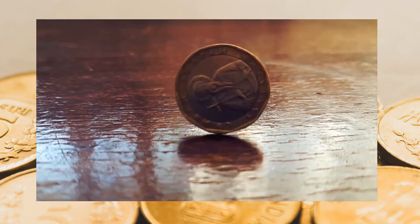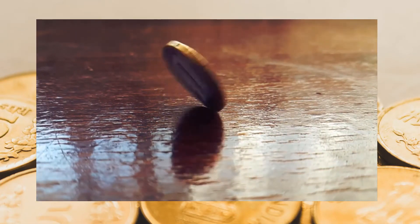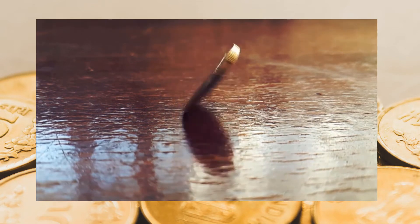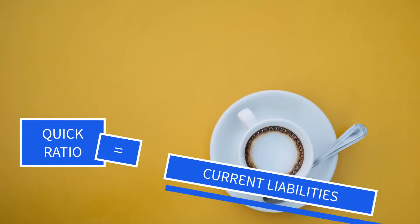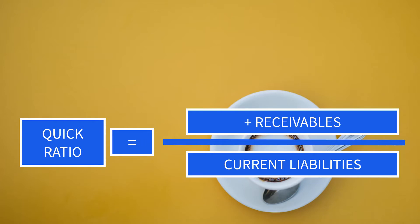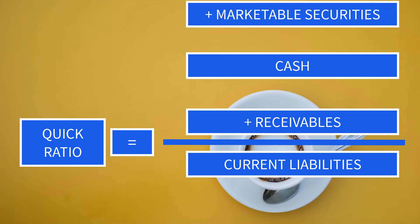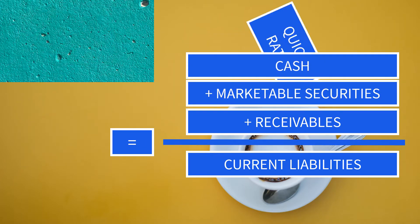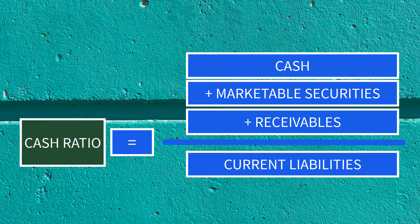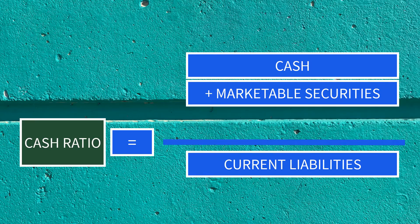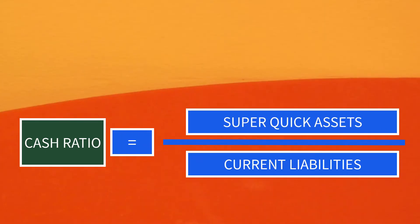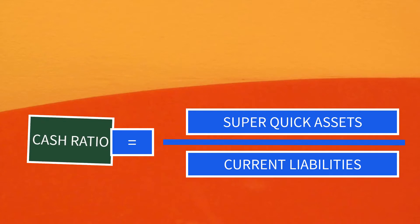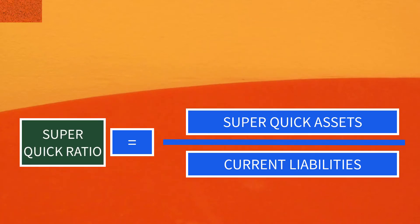The cash ratio is stricter or more conservative than the quick ratio in measuring a firm's liquidity. In quick ratio, receivables are included in the numerator alongside cash and marketable securities. However, in cash ratio, the numerator only includes the most liquid assets such as cash and marketable securities. These two assets are called super quick assets. Thus, cash ratio is also called super quick ratio.